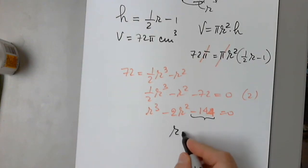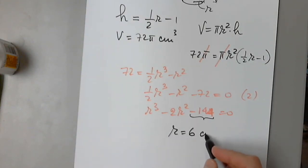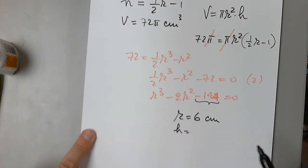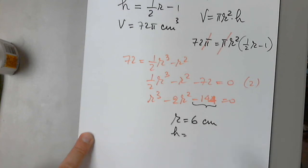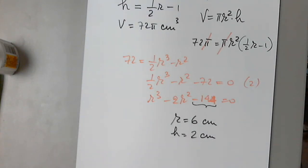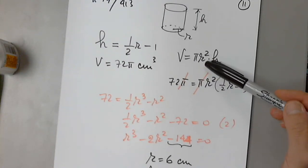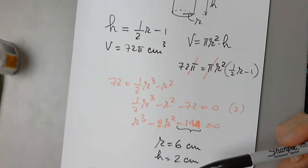So r equals six centimeters. If r is six centimeters, then now we can determine the height. Six divided by two is three. Three minus one is two. And we can always go back and check: 36 times 2 is indeed 72.